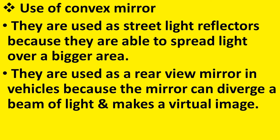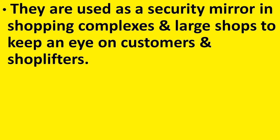Now we will see the uses of convex mirrors. First, they are used as street light reflectors because they are able to spread light over a bigger area. As the convex mirror always forms a diminished image and covers a wide range, it is used as a street light reflector as it can cover a larger area. Second, they are used as rear-view mirrors in vehicles because the mirror can diverge a beam of light and makes a virtual image. For whatever position the object may be, a convex mirror always forms a diminished, virtual, and erect image and covers a wide range of area, making it suitable as a rear-view mirror. Convex mirrors are also used as security mirrors in shopping complexes and large shops to keep an eye on customers and shoplifters.